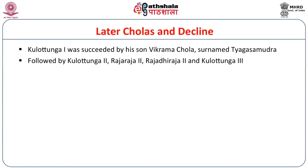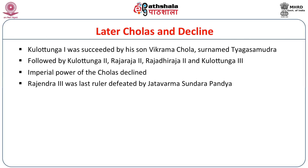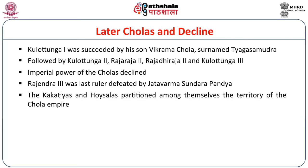Kulottunga I was succeeded by his son Vikramachola, surnamed Yagasamudra, followed by Kulottunga II, Rajaraja II, and Kulottunga III. During their rule, the imperial power of the Cholas declined. Rajendra III was the last ruler, who suffered defeat under Jatavarma Sundarapandya. The Kakatiyas and Hoysalas, who rose to prominence in the Deccan and South India, partitioned among themselves the territory of the Chola Empire. Thus, the Chola power came to an end in the beginnings of the 13th century.